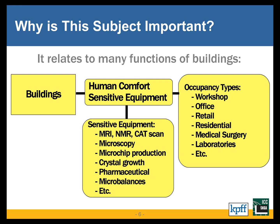With regard to equipment, we cross over into a range of very small vibrations that are generally not feelable or sensed by humans. Those would include imaging equipment like MRI, nuclear magnetic resonance, or CAT scan machines, microscopy — particularly photographic microscopy — microchip production such as growing crystals for microchips, pharmaceutical processes, microbalances, and a whole host of other sensitive equipment.